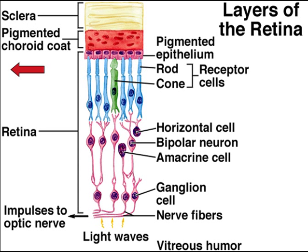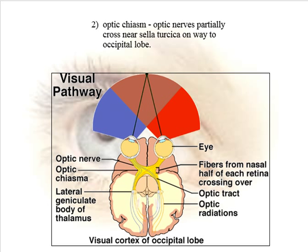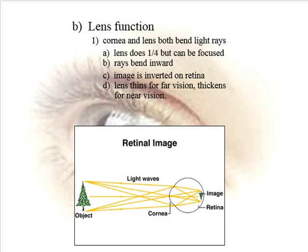Vision is in the brain, not in the eye itself. If you start electrically stimulating parts of the brain, people will see stars or whatever — the eye is just a sense organ. The cornea and the lens bend the light rays. The cornea does most of the light ray bending; the lens only does about a quarter of the bending, but we can focus the lens.